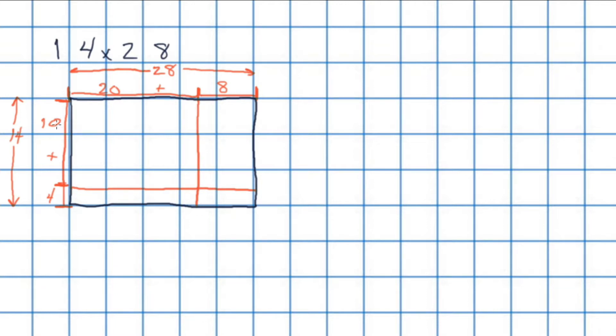So this rectangle here, we have a side length of 10 multiplied by a side length of 20. So 10 multiplied by 20. So 10 multiplied by 20 equals 200. I'll write that in a different color just so it jumps out a bit. This rectangle here, this smaller one, has a side length of 10 and a side length of 8. So we're going to multiply 10 by 8. And that is going to equal 80.